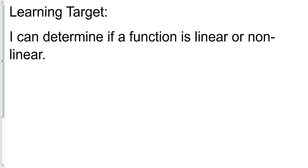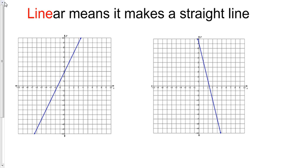I can determine if a function is linear or nonlinear. Basically, linear means it makes a straight line. So if I look at a graph and I see that the equation is graphed as a straight line, I would say it's linear. Same with this - doesn't matter whether it's going up or down, as long as it's a straight line it is linear.